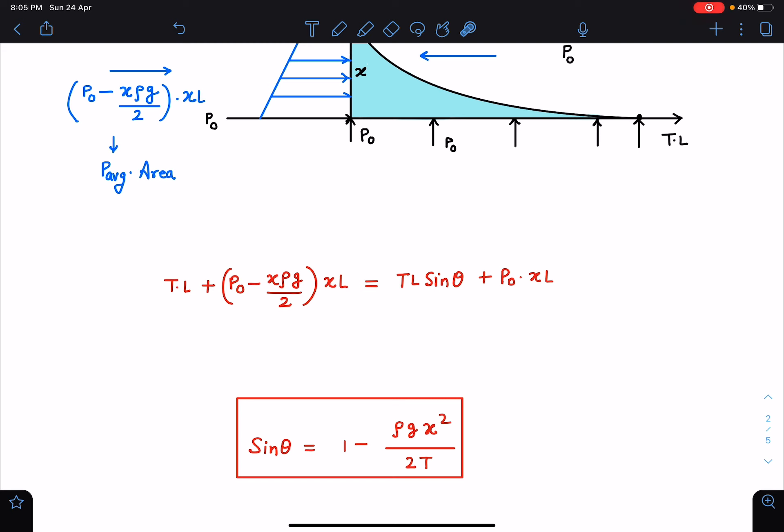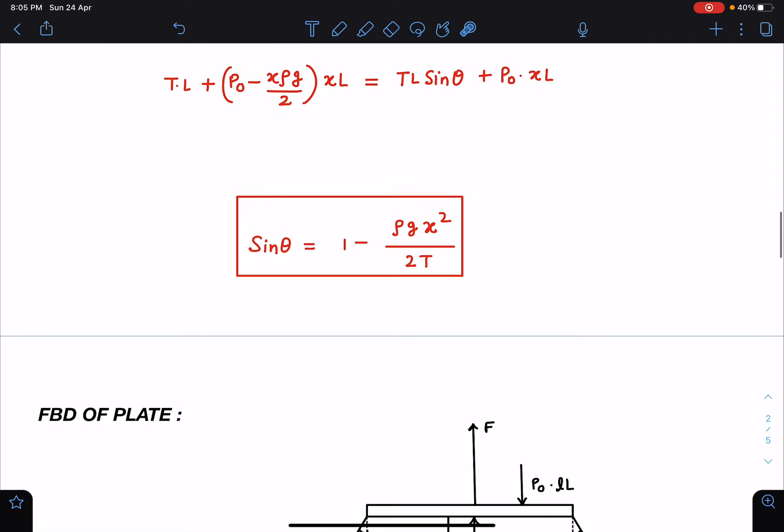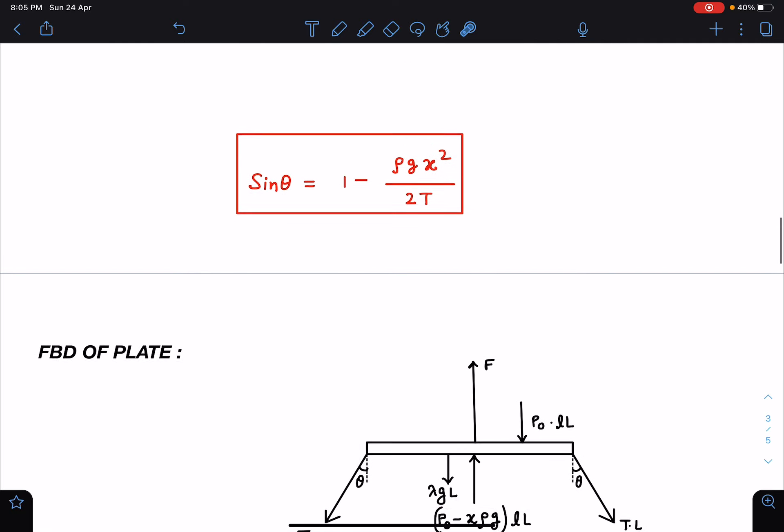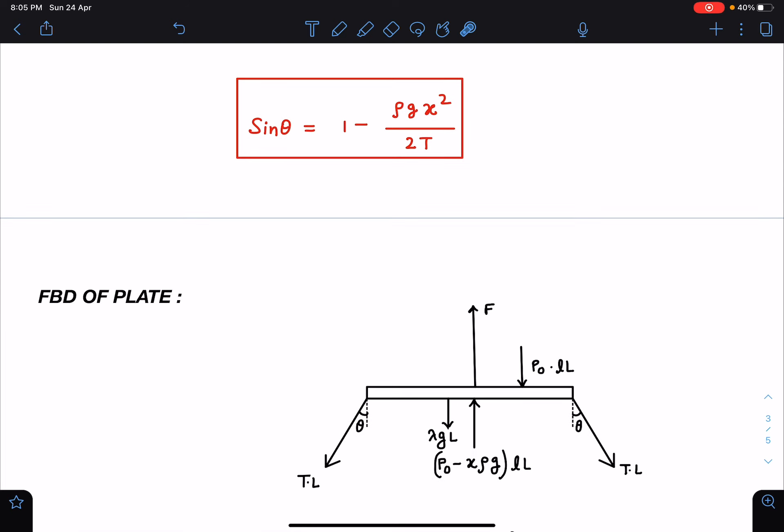After this we can draw the FBD of plate. So this is the agent force, and atmospheric pressure P₀ into plate area. Similarly here we know the pressure at this entire level which is P₀ minus x ρ g. So P₀ minus x ρ g into area of the plate, then weight mg of this, and surface tension force action-reaction pair which is here at an angle of θ. Now when we balance these forces...